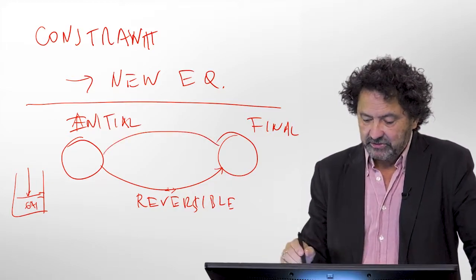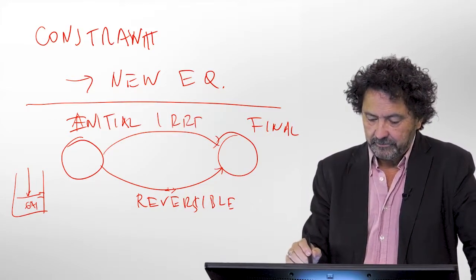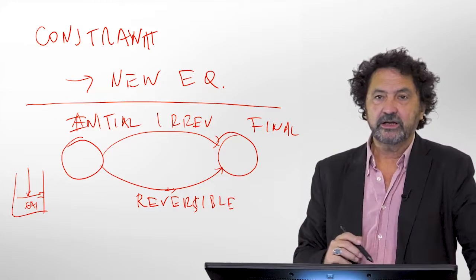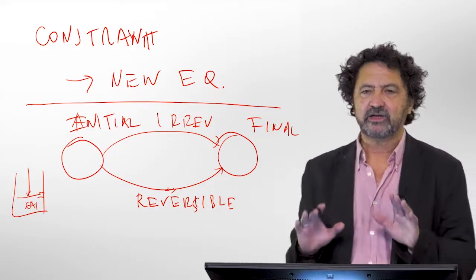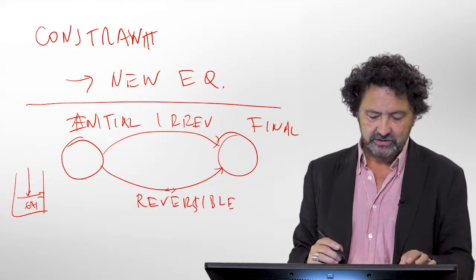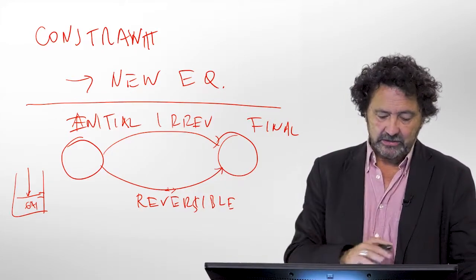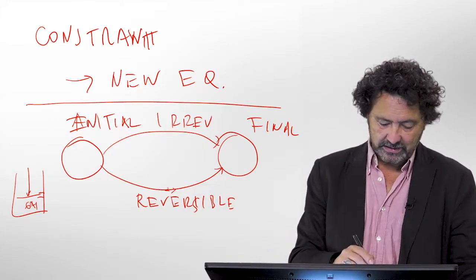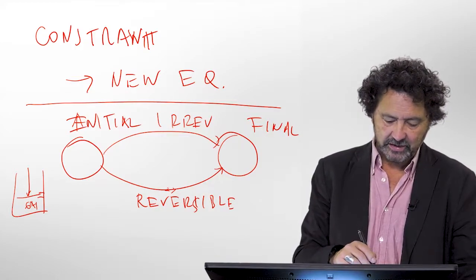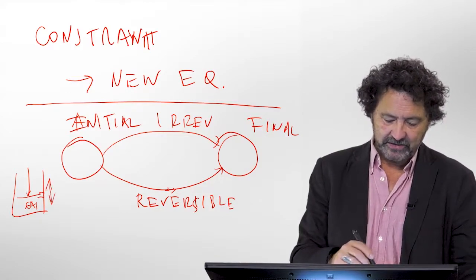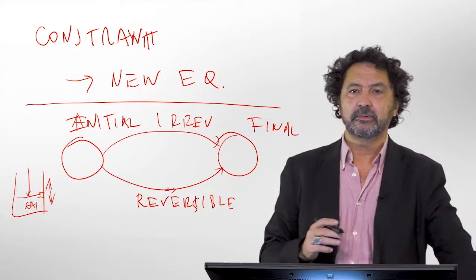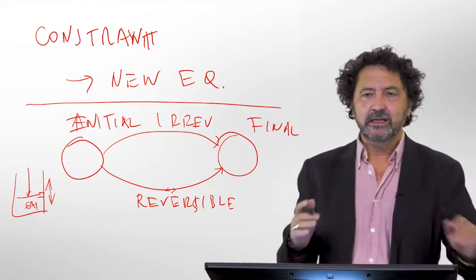In an irreversible process, this constraint is not there. This condition is not fulfilled, and then what happens is that you get variations, fluctuations, and you can get any type of variations in this dynamical behavior.